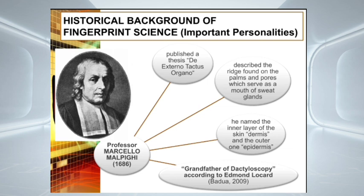Another important personality was Professor Marcelo Malpighi in 1686. He is a plant morphologist at the University of Bologna, an Italian anatomist, and is known as the grandfather of dactyloscopy according to Edmund Lockhart. He commented in his writings on elevated ridges on the fingertips and alluded to diverse figures on the palmar surface.